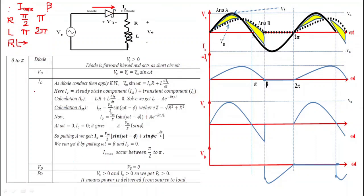Now we will calculate the value of output current. To get the output current, we apply KVL in this loop. When we apply KVL, we get: Vm sin(ωt) = i₀R + L·(di₀/dt). This current i₀ has two components.